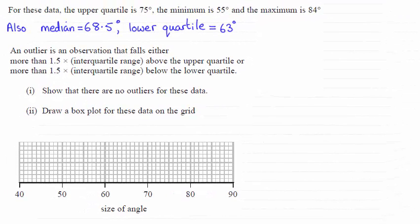Hi there. Now for this question comes in two parts. We had to first of all show that there are no outliers for the data and then go on to draw a box plot for these data on this grid here.